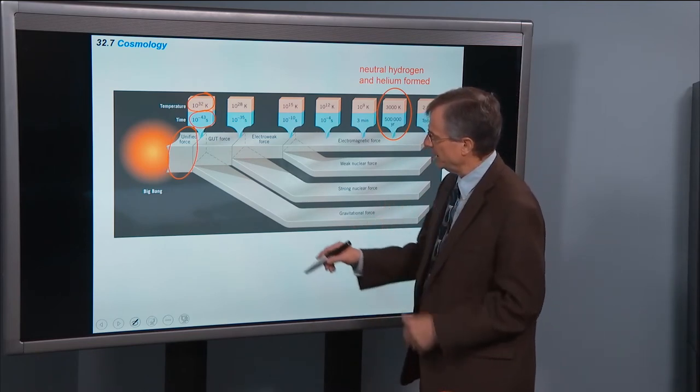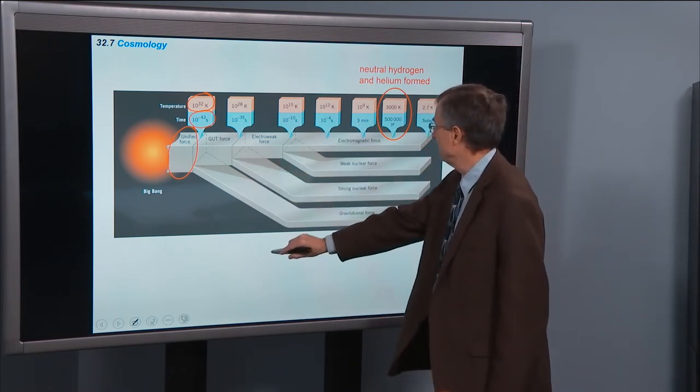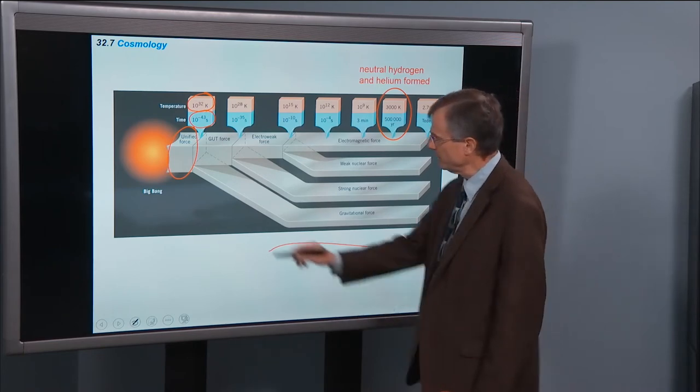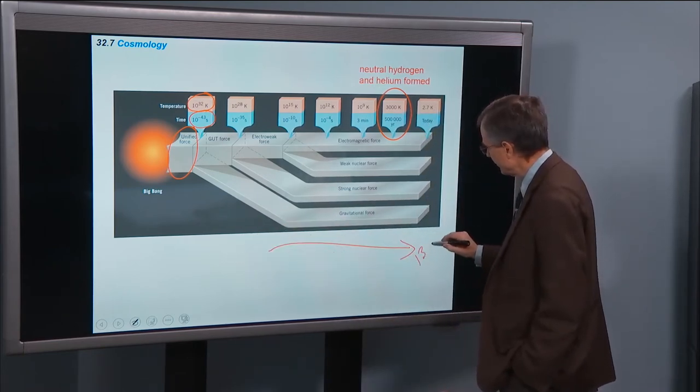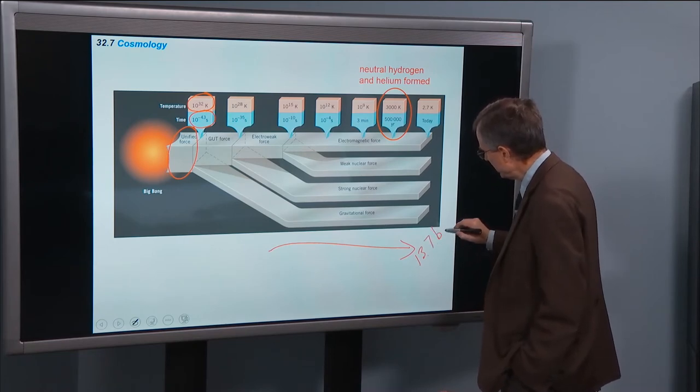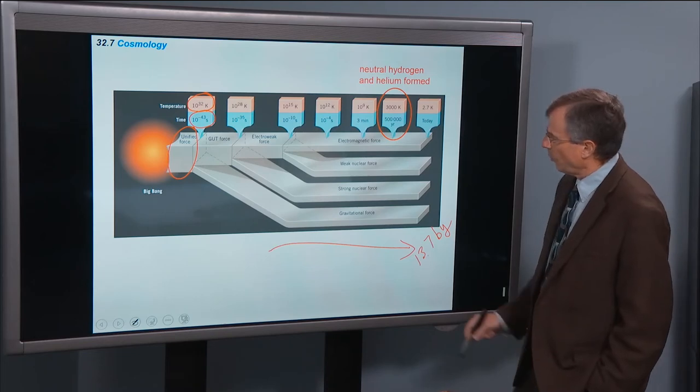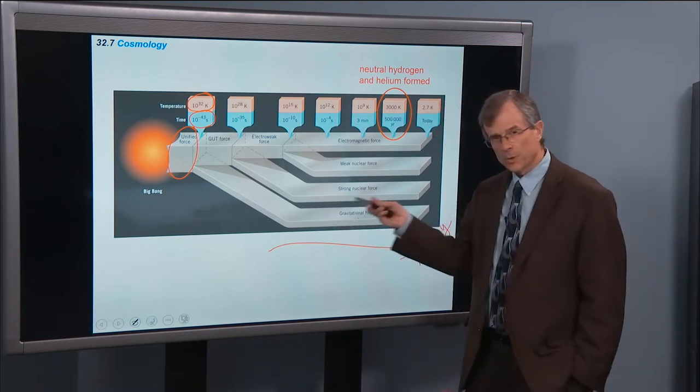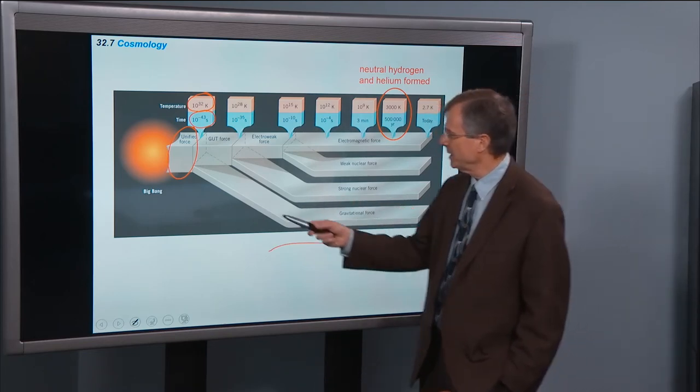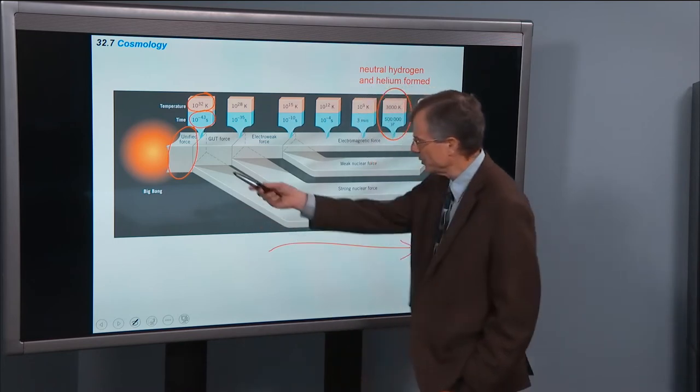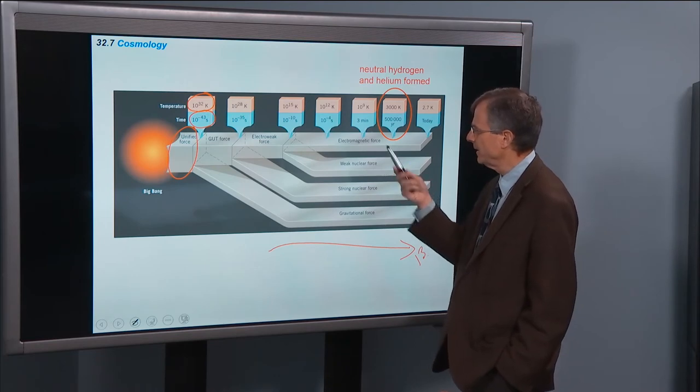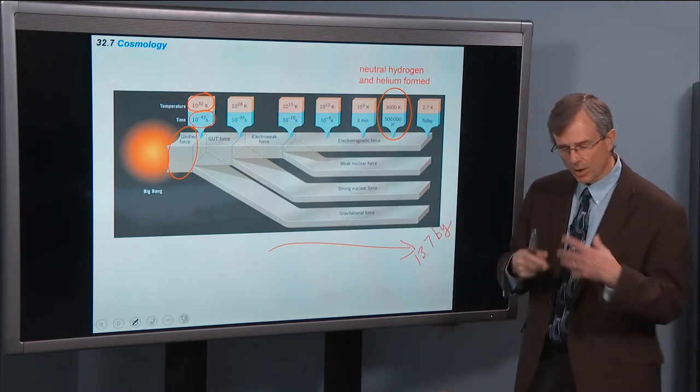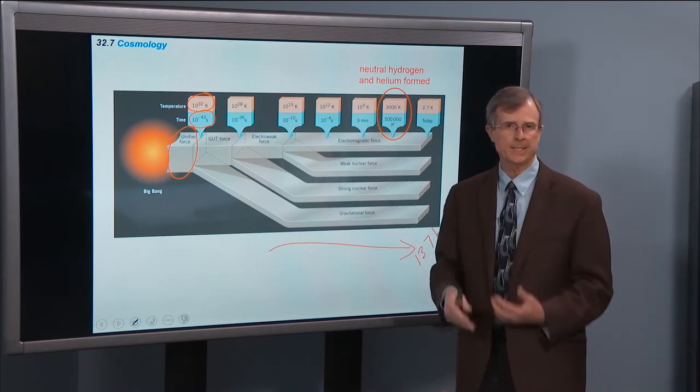These different, as it cooled, so this is a timeline from the Big Bang to now, which is 13.7 billion years. One by one, these forces froze out from the unified force. We first got gravity that started to play a role. Then the strong nuclear, then the weak nuclear, and then the electromagnetic force. And now all these different forces have their different identities.